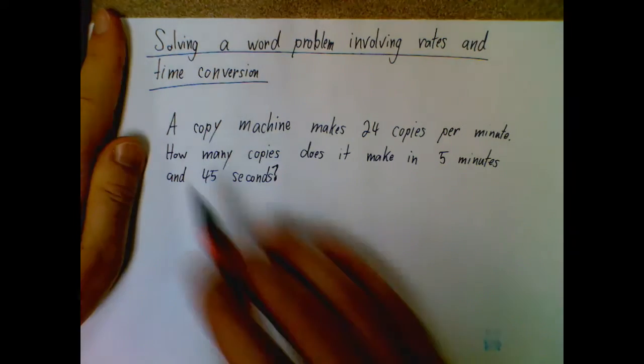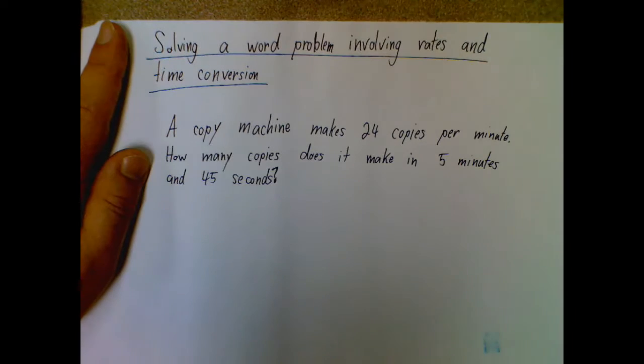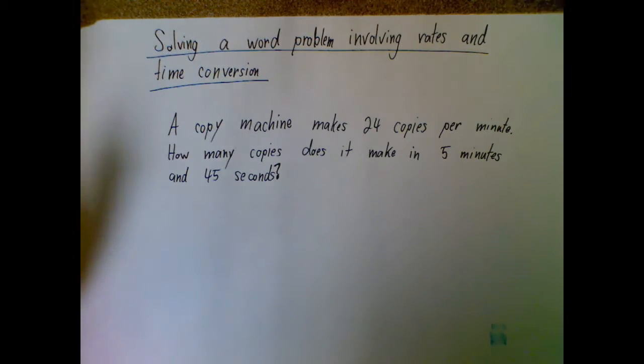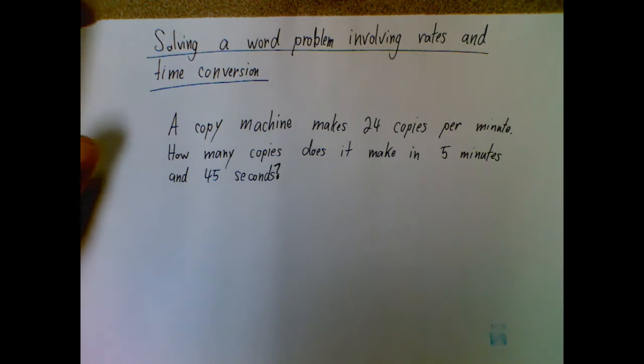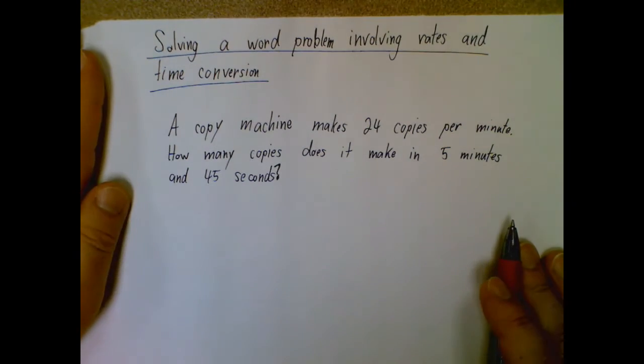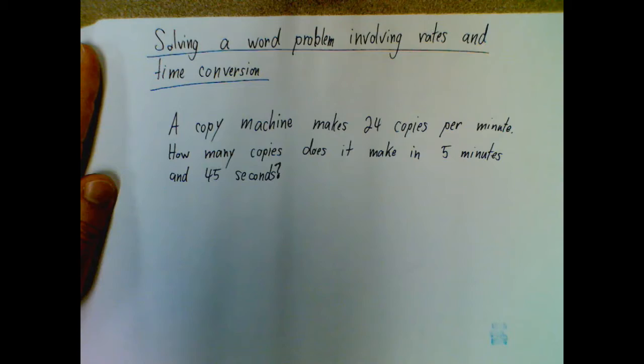So we have a copy machine that makes 24 copies per minute. How many copies does it make in five minutes and 45 seconds? All right. So setting this one up is not as hard as people think it is, but there is one part that tends to trip people up and they tend to make a mistake with it. So I'll get to those as we go along, but I wanted to let you know there is an important thing going on with this five minutes and 45 seconds.